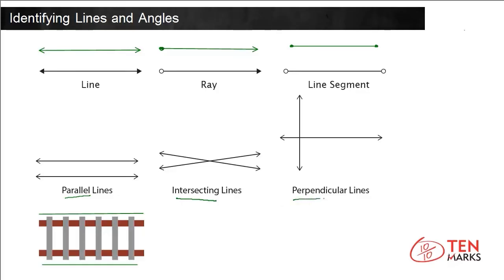Next, we have perpendicular lines. Lines that cross at a certain angle, 90-degree angle, are called perpendicular lines. They form a square angle or an L-shaped angle.